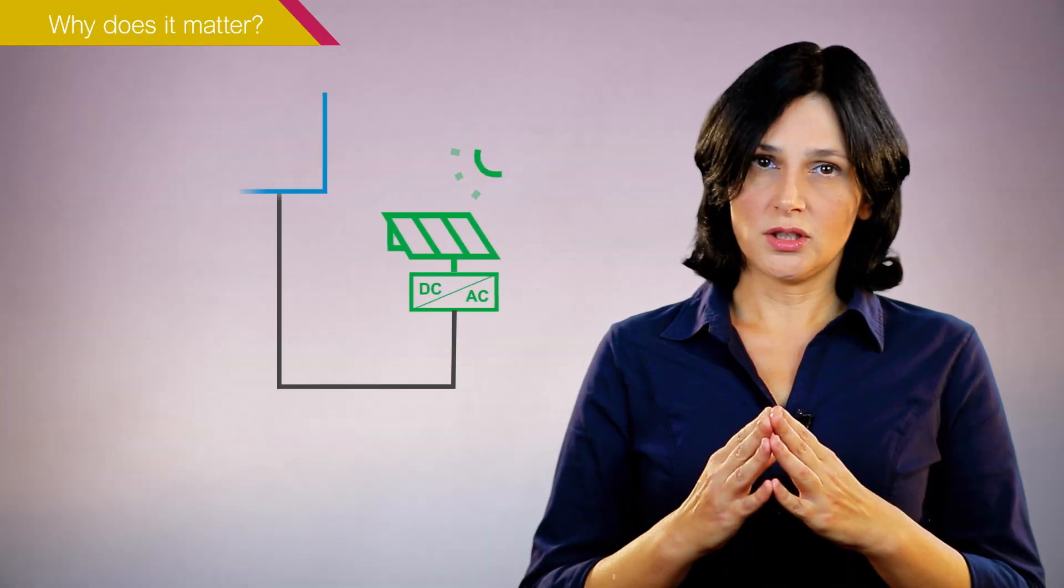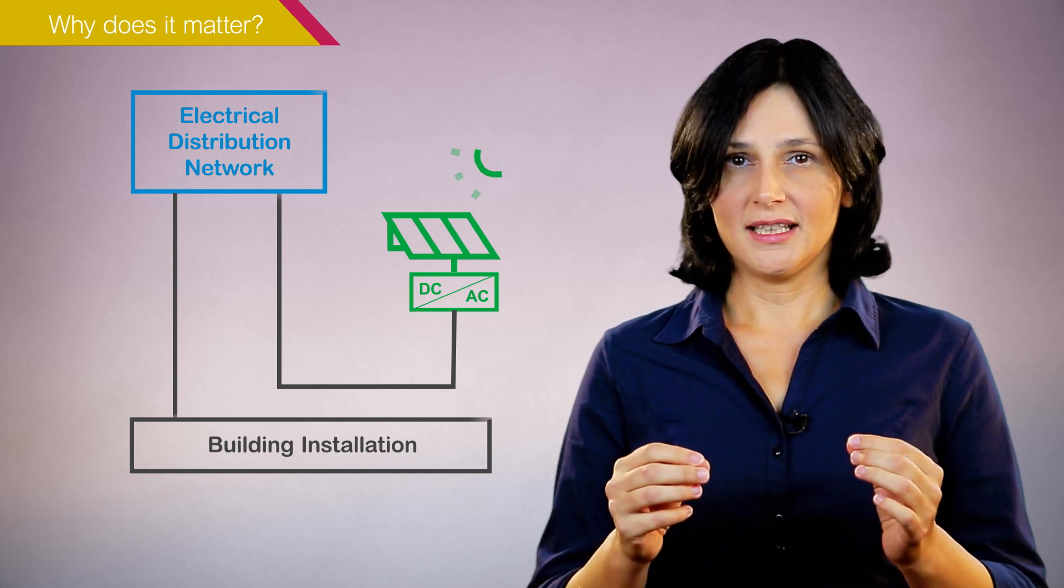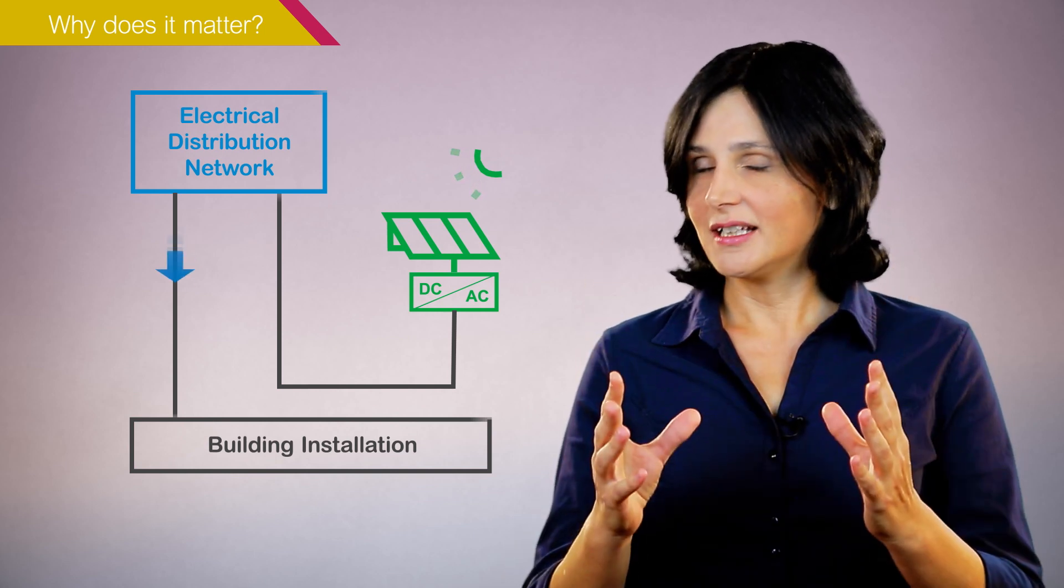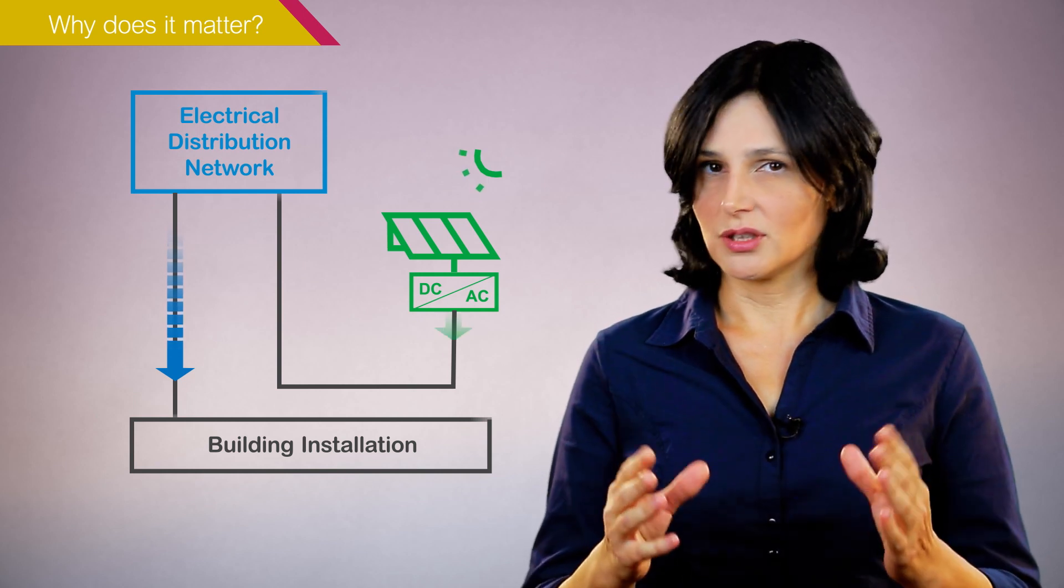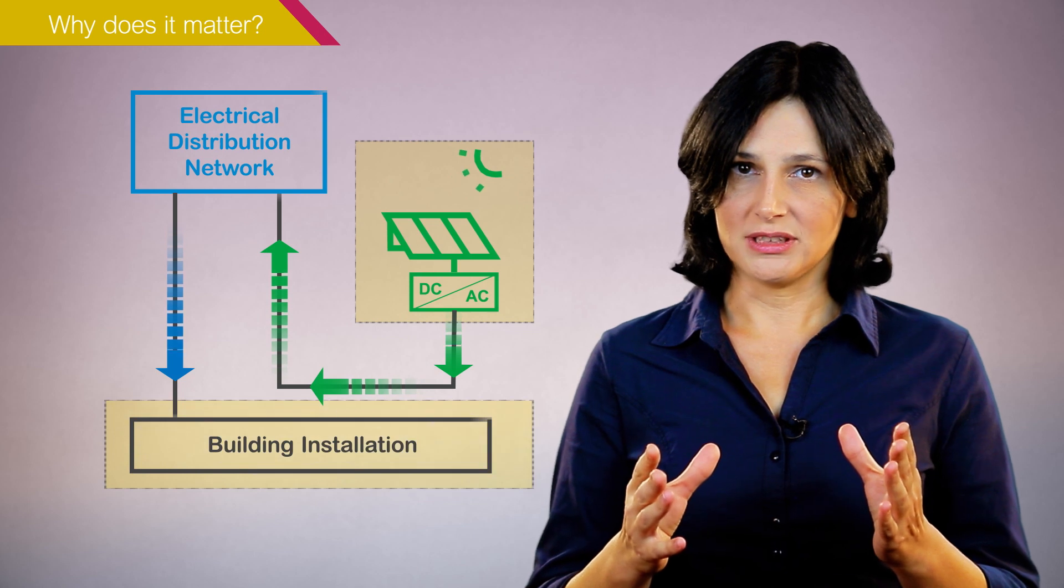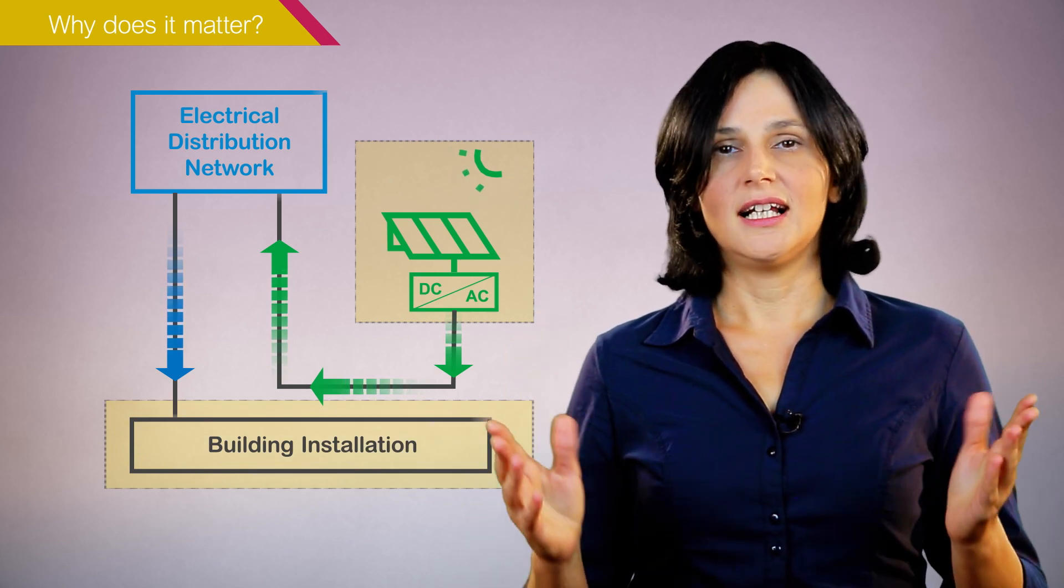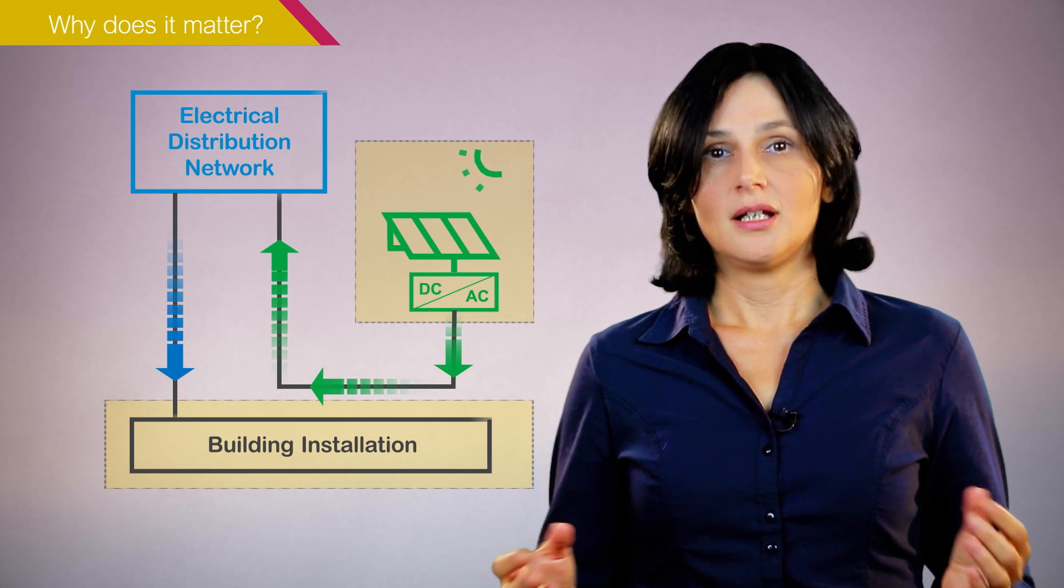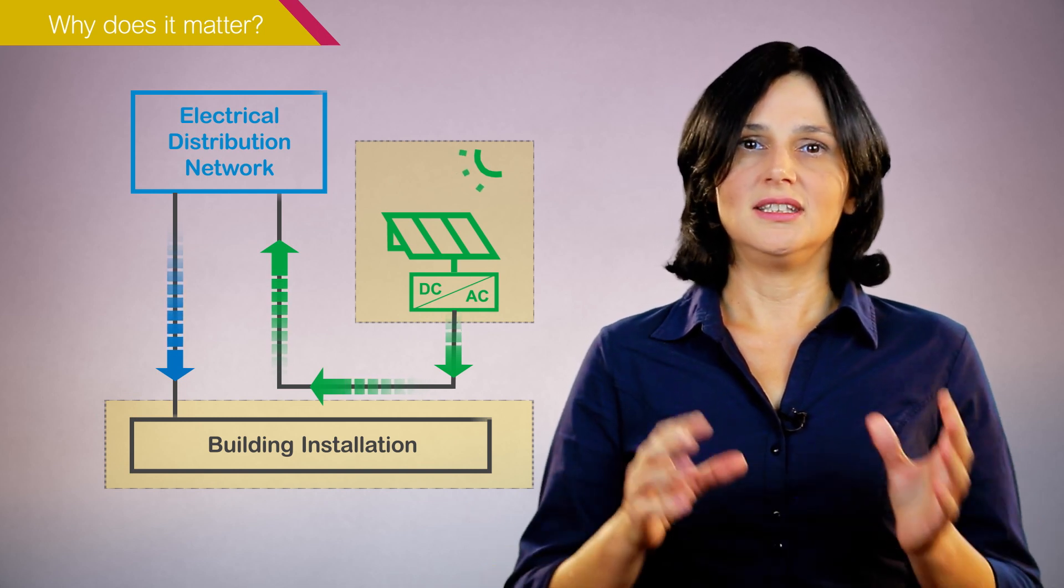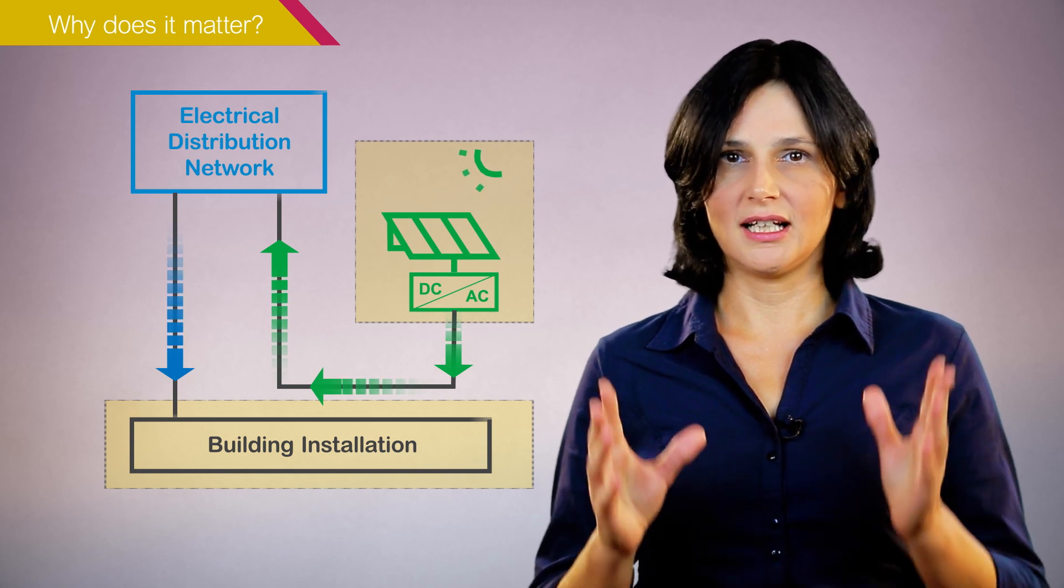When solar production is entirely exported to the grid, the photovoltaic installation is directly connected to the electrical distribution network. The photovoltaic installation and the building electrical installation are two separate and independent electrical systems. The photovoltaic system, in this case, has no impact on the design of the building electrical installation.